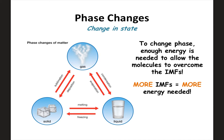Phase changes are just changes in state — going from a solid to a liquid, or liquid to gas, and so on. The key is, if you want to change phase, you need enough energy to overcome the IMFs. The more IMFs, or the stronger the IMFs that a particular molecule has, the more energy that is needed. So if you have a solid and you're trying to get it to melt, you have to overcome the IMFs to get it to melt into a liquid. If you want that liquid to turn to a gas, you have to overcome all the IMFs to get it to go to the gas phase.